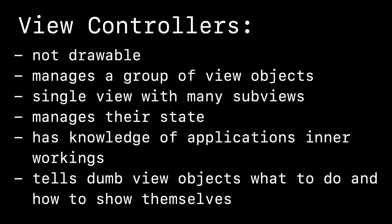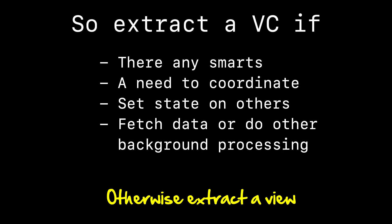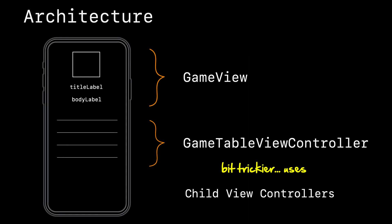View controllers on the other hand are pretty smart. Though not drawable themselves, they manage groups of view objects — usually a single view with many sub-views — and they manage view state. They have knowledge of how the application works; they go out and fetch data, coordinate things, and tell the dumb view objects what to do and how to show themselves. So you want to extract a view controller when you've got a lot of smarts, need to coordinate multiple views, fetch data, or do background processing.